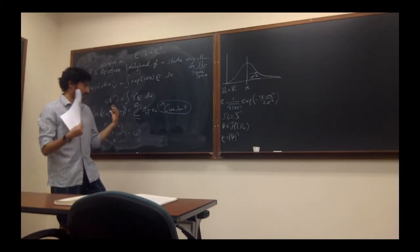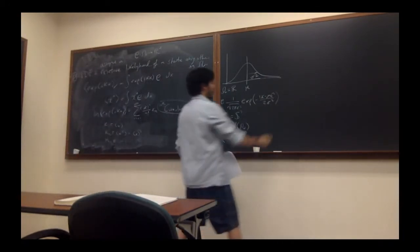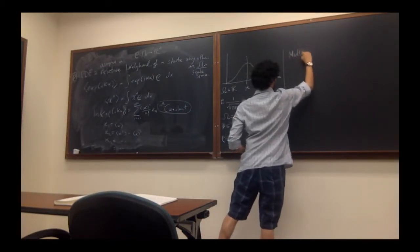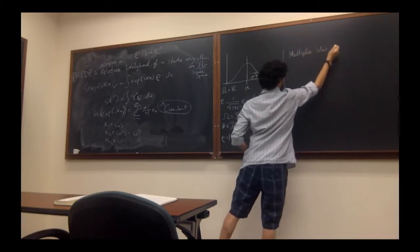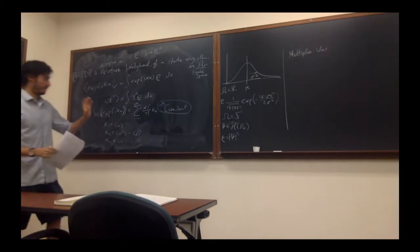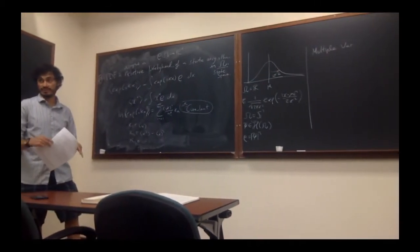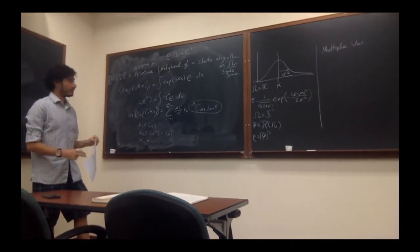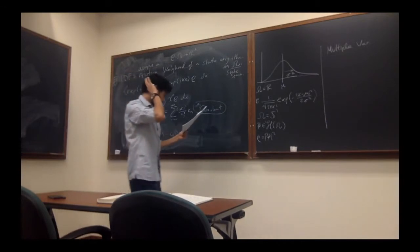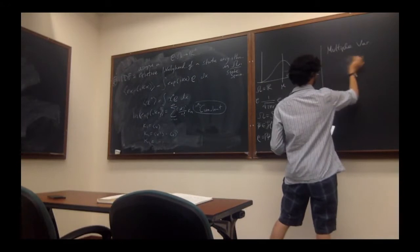And then I was going to talk about multivariate PDFs. So now we have multiple variables. And so there's actually something we should caution here, because with multiple variables you can have correlations between variables. So that's something you need to keep in mind. The best example for a multiple variable PDF is the Gaussian.